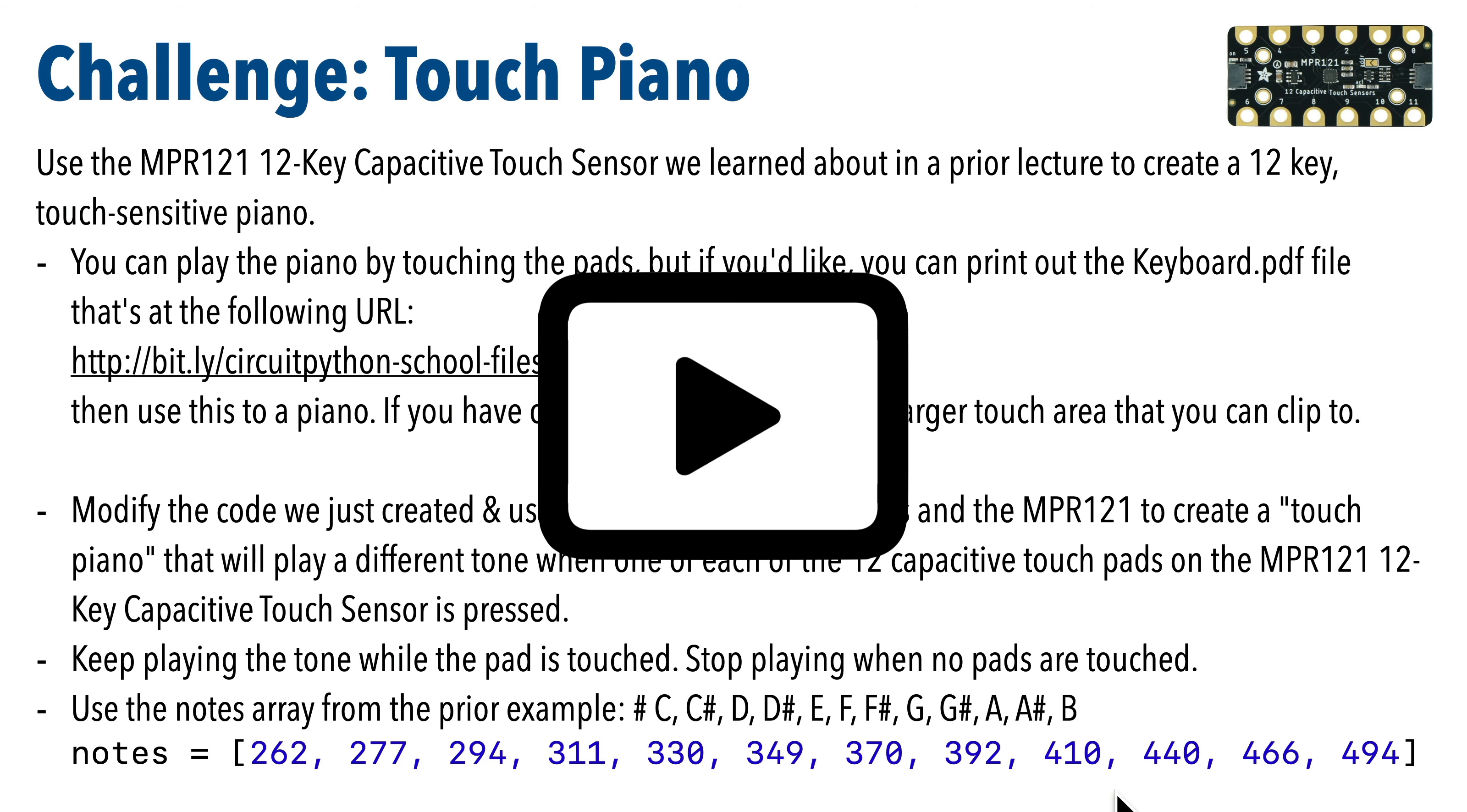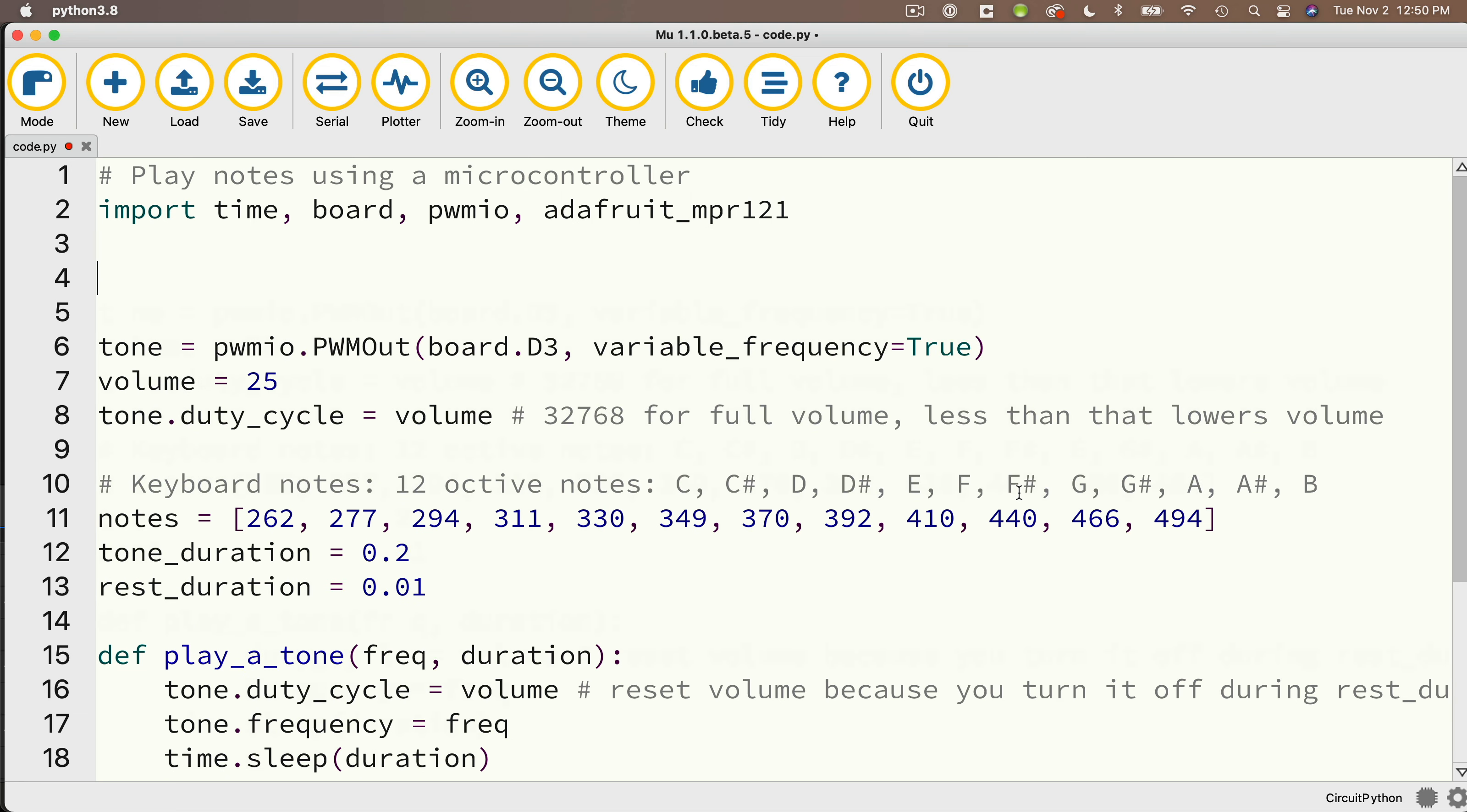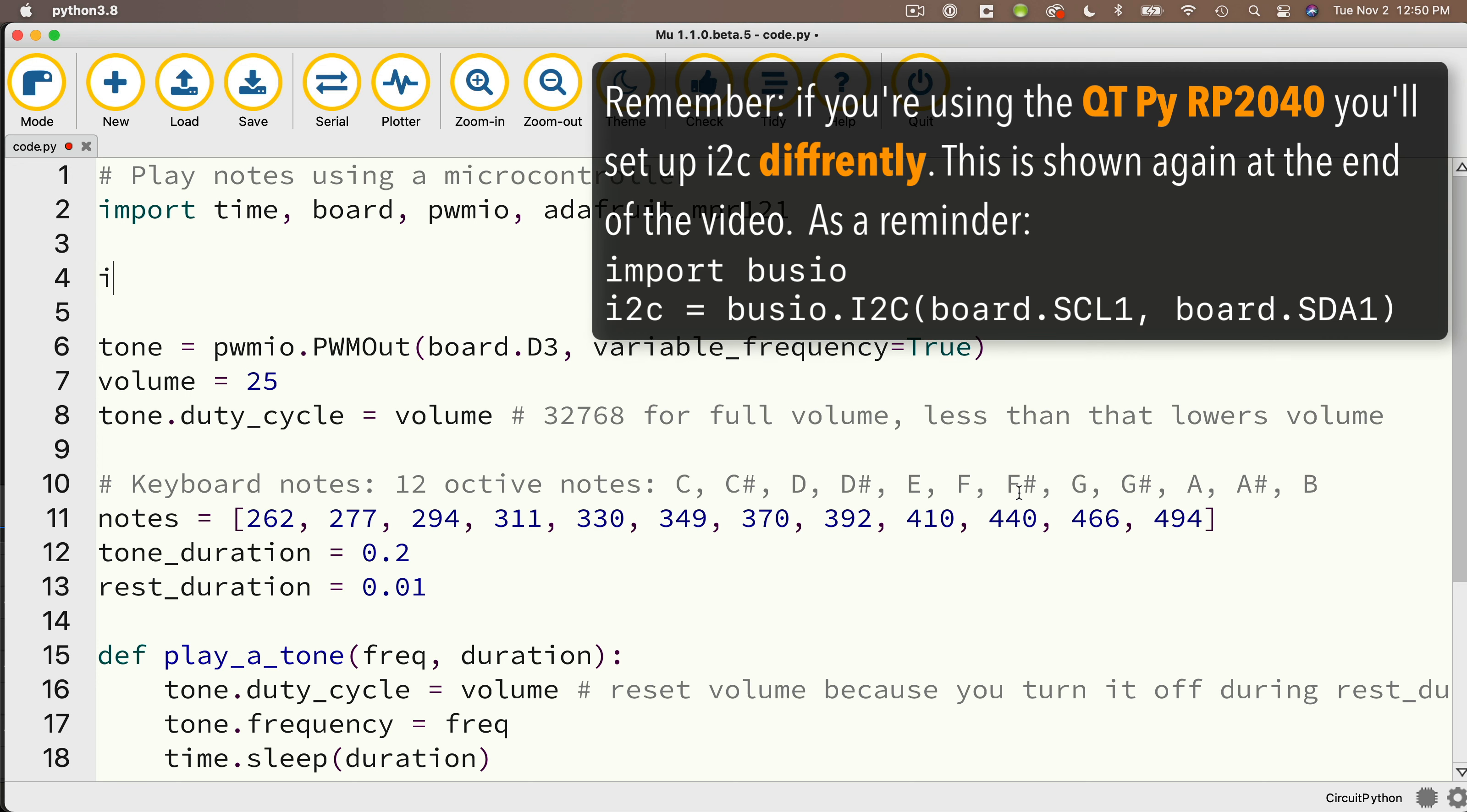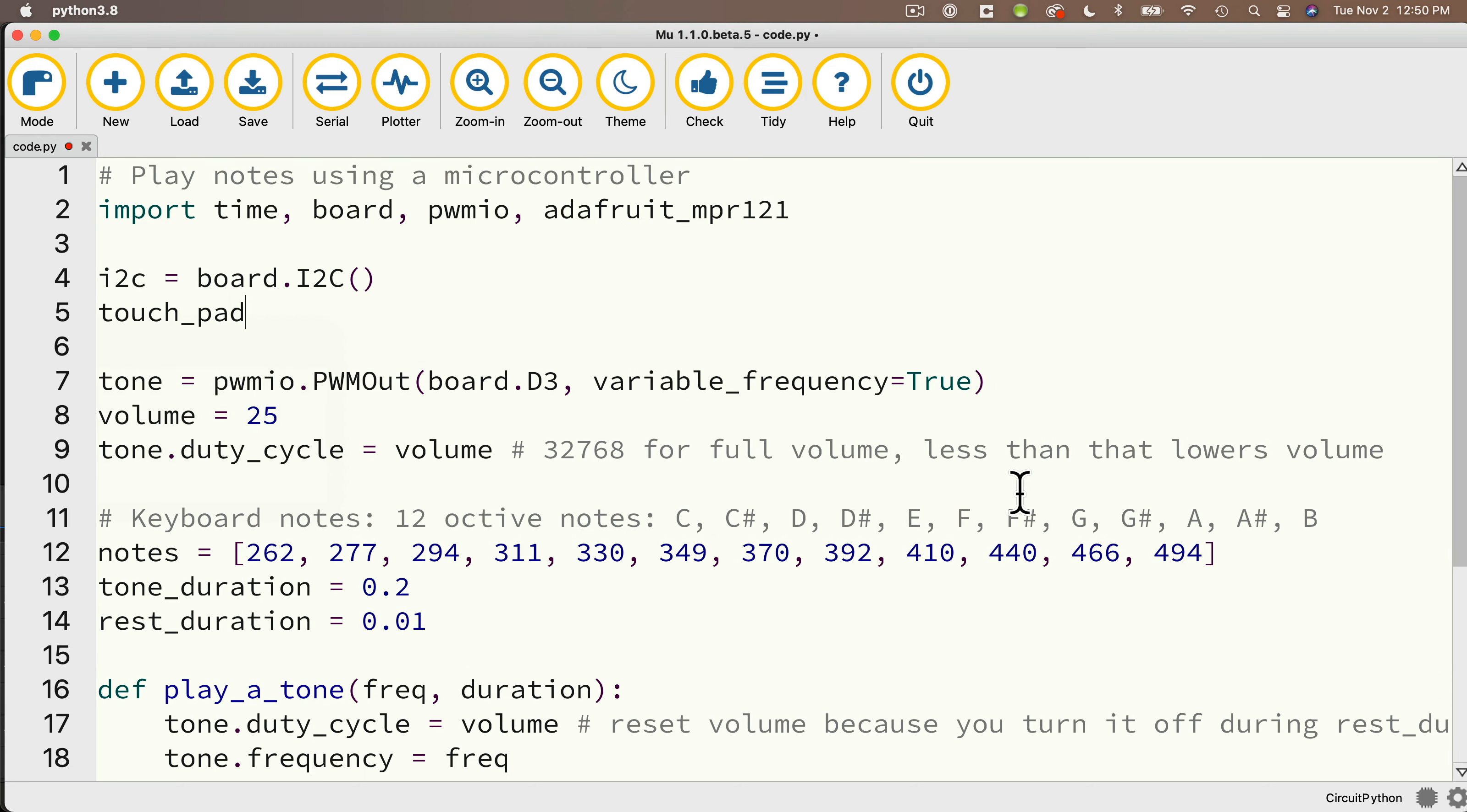And resume. Let's compare answers. To work with the MPR 121 breakout, we're going to import adafruit_mpr121. Then we're going to create our I squared C object. We usually call that i2c, set that equal to board.I2C open and close parens. And then we're going to set up our touch pad object, which we'll call touch_pad, equals adafruit_mpr121.MPR121 passing in the I squared C object we just created.